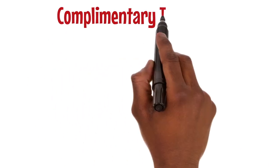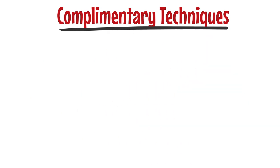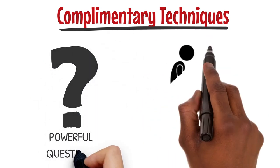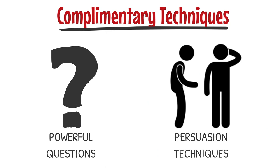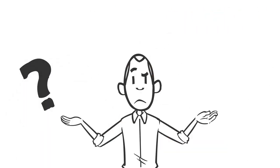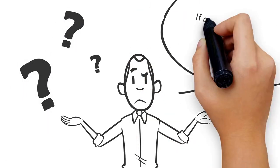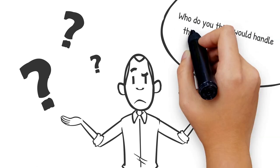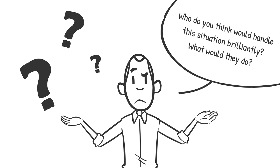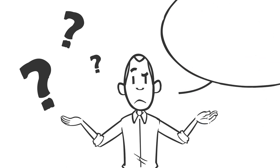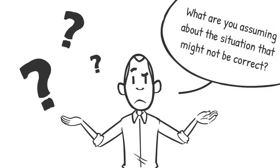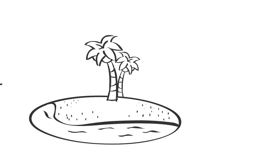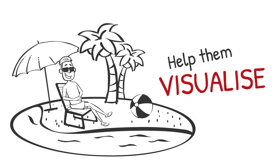A couple of complementary techniques I've found useful are powerful questions and persuasion techniques. Powerful questions such as: if a future version of yourself were here, what would their advice be to you? Who do you think would handle this situation brilliantly — what would they do? And what are you assuming about this situation that might not be correct? Persuasion techniques include helping people visualise the future and making a change more attractive.